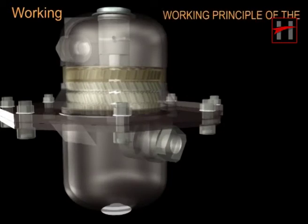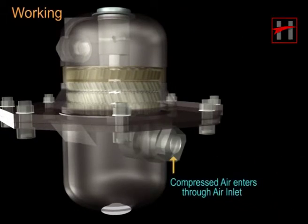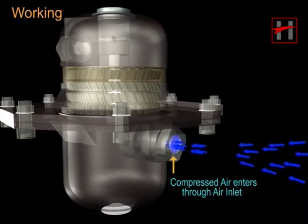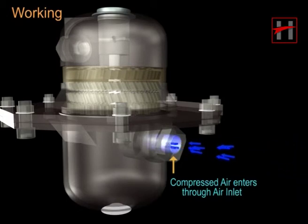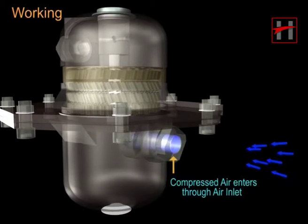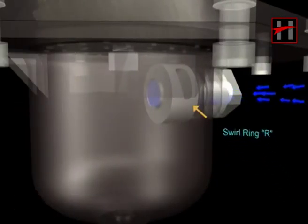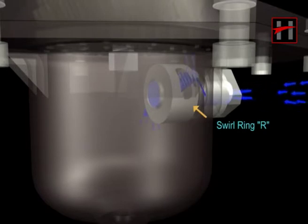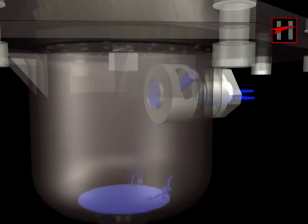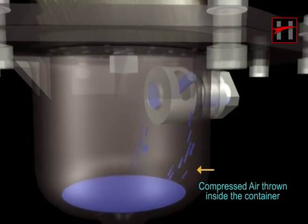The working principle of the oil separator is as follows. The compressed air enters the bottom part of the oil separator through the air inlet. The swirl ring at the inlet union redirects the compressed air and throws it against the inside of the container.